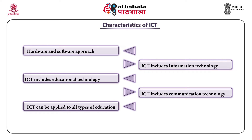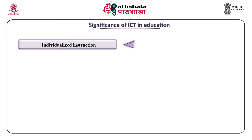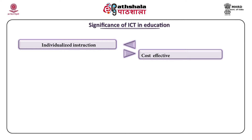Now we will discuss about significance of ICT in education. First is individualized instruction. Due to overcrowded classrooms, it is highly impossible for teachers to provide individualized instructions. But ICT helps the teacher to provide all the facilities to make individualized instructions possible. ICT enables catering to individual needs of students, and teachers can provide experiences as per their learning style, interest and need. With the help of online tutoring and computer assisted instruction, students can be given individualized instruction. Second significance is ICT proves to be cost effective — ICT reduces the cost of education. Of course, initial investment is high, but it is definitely very cost effective for longer periods as it reaches the masses.